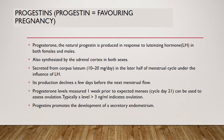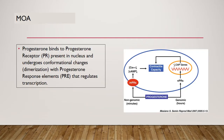Progesterone converts the endometrium to its secretory stage to prepare the uterus for implantation. At the same time, it affects the vaginal epithelium and cervical mucus, making it thick and impenetrable. Progesterone exerts its effects through the progesterone receptor, a member of the nuclear steroid hormone superfamily, acting through specific progesterone response elements within the promoter region of target genes to regulate transcription — this is described as the genomic mechanism of progesterone action.